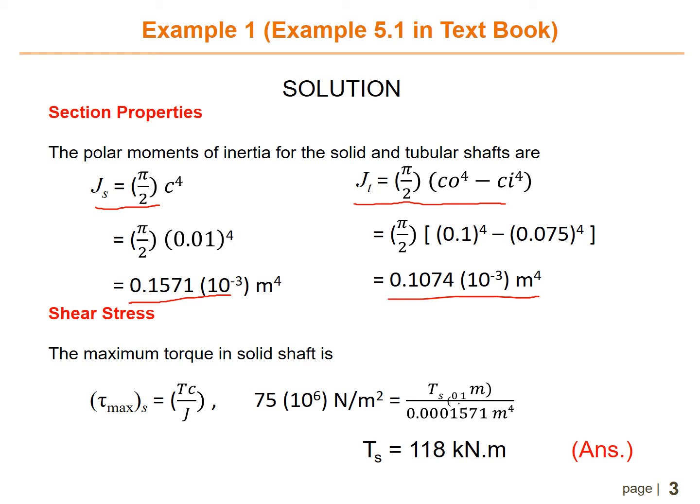The next step is to find the shear stress and maximum torque in the solid shaft. We use the formula tau_max equals T times c over J. The maximum shear stress from the question is 75 times 10 to the power of 6 newtons per meter squared. Substituting c equals 0.1 meters and J equals 0.01571 times 10 to the negative 3 meters to the power of 4, we get the maximum torque for the solid shaft equals 0.018 kilonewton meters.